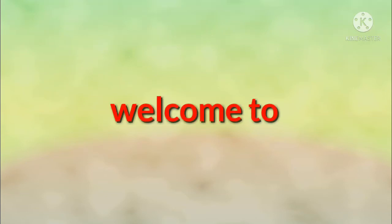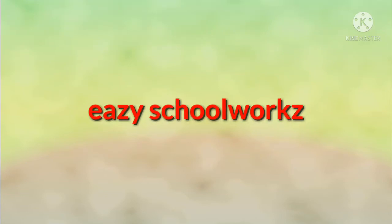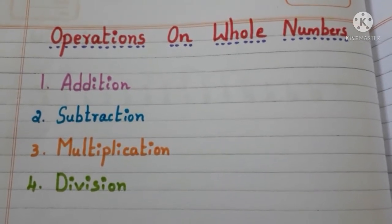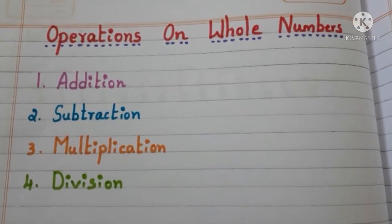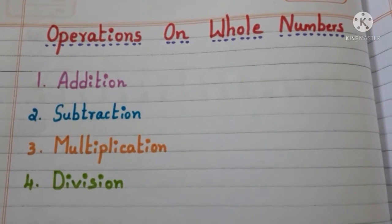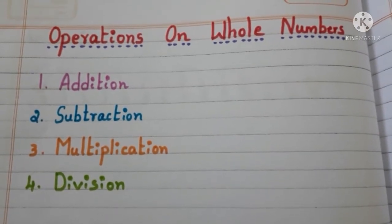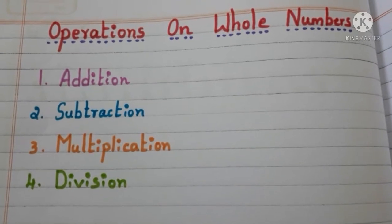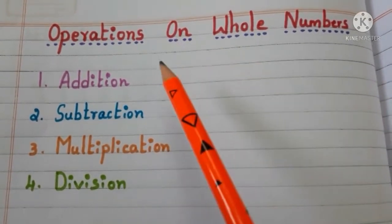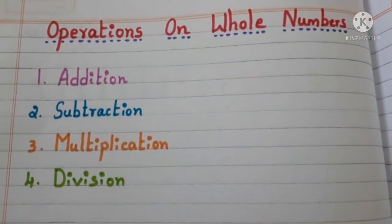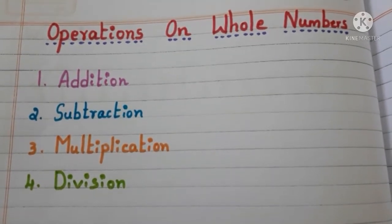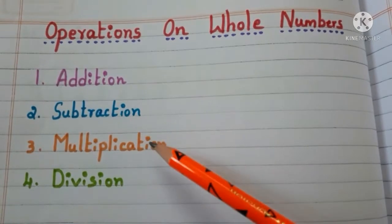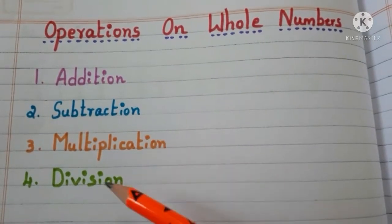Hi y'all, welcome back to Easy School Works. In the previous video we already learned about whole numbers — if you want to watch that video, please click the link given in the description box. In this video we are going to learn about operations on whole numbers. So let's get started. We can perform addition, subtraction, multiplication, and division on whole numbers.